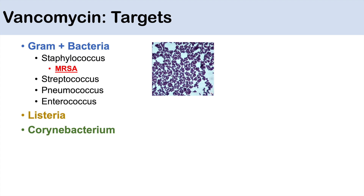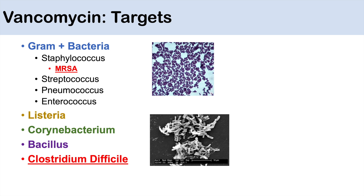It can also target Listeria, Corynebacterium, and Bacillus. It can also be used to treat Clostridium difficile. For Clostridium difficile, we actually use it as PO administration. I mentioned before that we typically use it as IV because it has reduced intestinal absorption — but that's okay when we want to target C. diff, because C. diff is in the GI tract. So we can give it PO; it won't be absorbed systemically, so it stays isolated in the GI system and can target C. diff fine. The two main targets to remember are MRSA and Clostridium difficile.